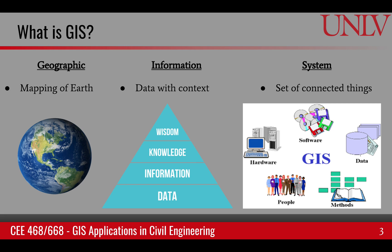Geographic refers to anything that deals with mapping of the earth, so in a geographic information system we are dealing with maps and spatial data about the surface of the earth, the atmosphere, and below the earth's surface as well. Information is data with context — data is for computers, whereas information is data transformed into something that can be consumed by humans.